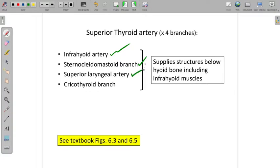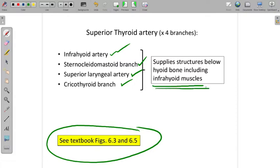The superior part of the larynx, and the cricothyroid. Hopefully you remember where the cricoid cartilage is and the thyroid cartilage. Take a look at figure 6.3 and 6.5 in the book. The superior thyroid is supplying structures basically below the hyoid bone, including a number of the infrahyoid muscles. Could you still name the infrahyoid muscles? Could you still name and ID?